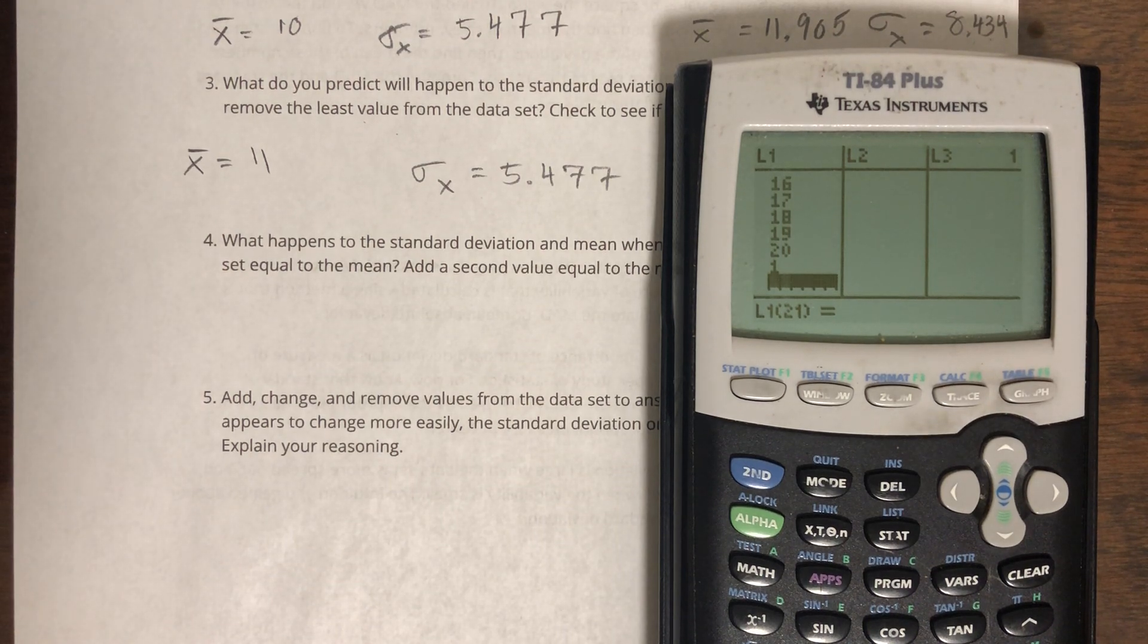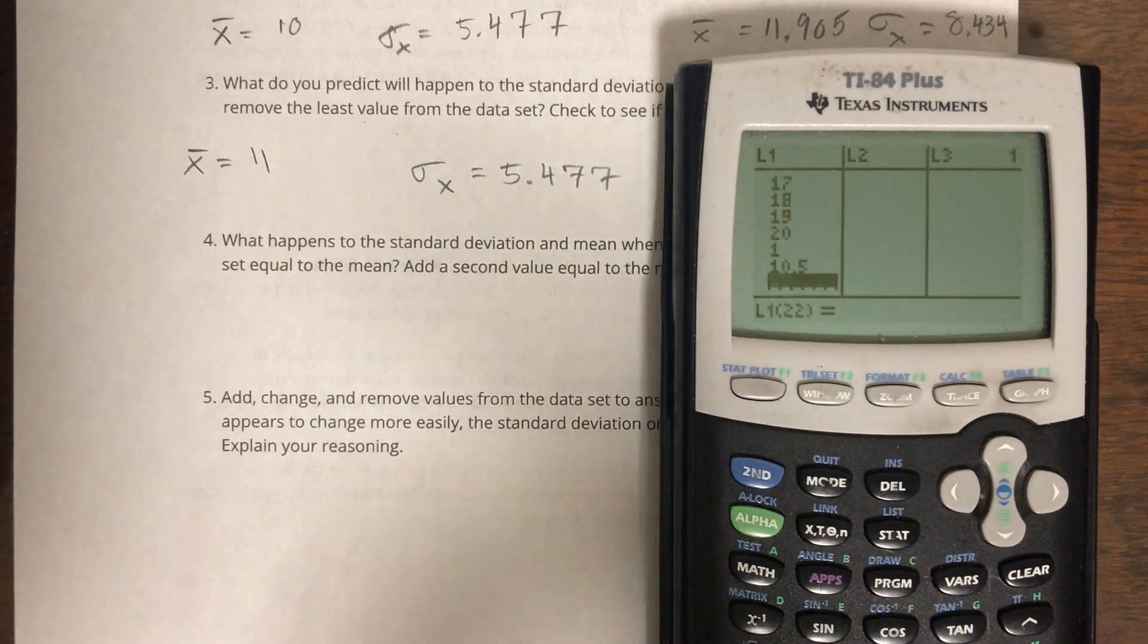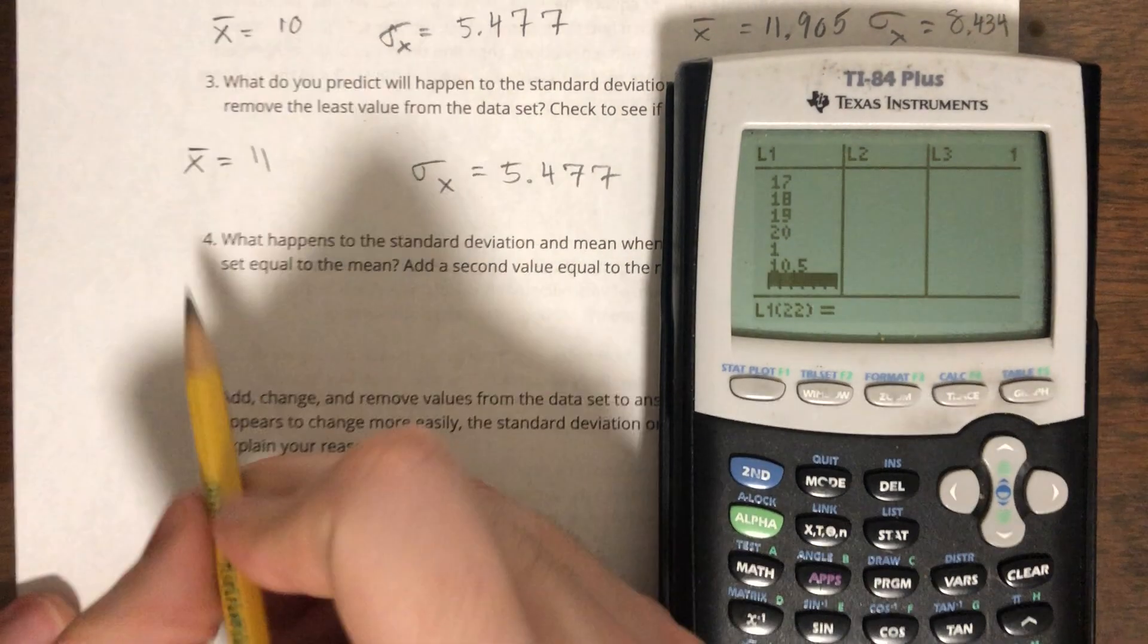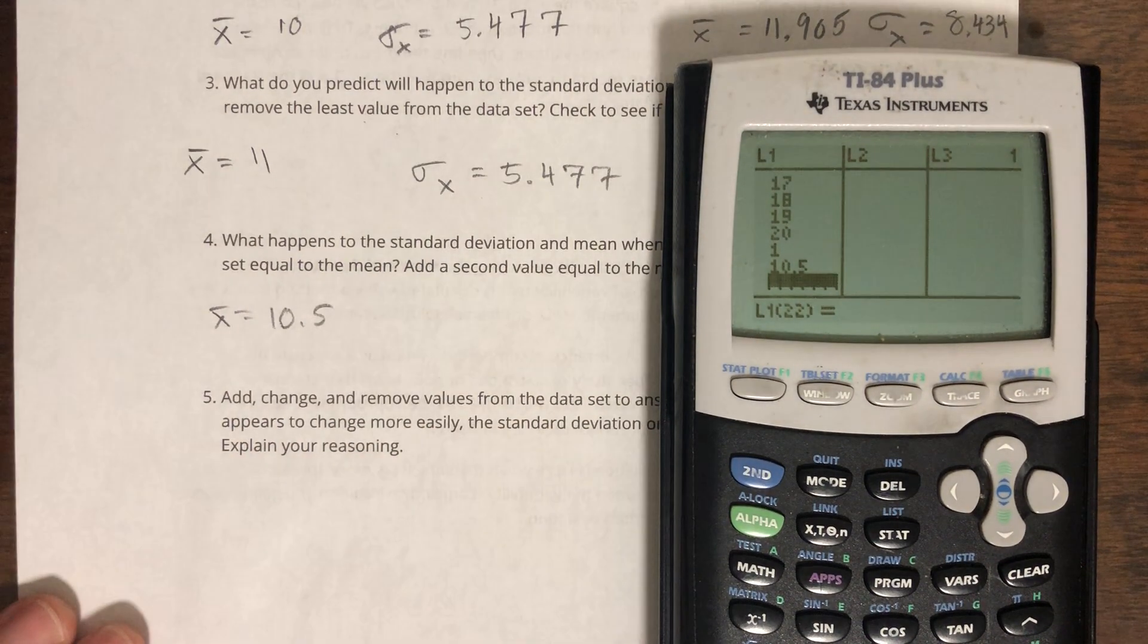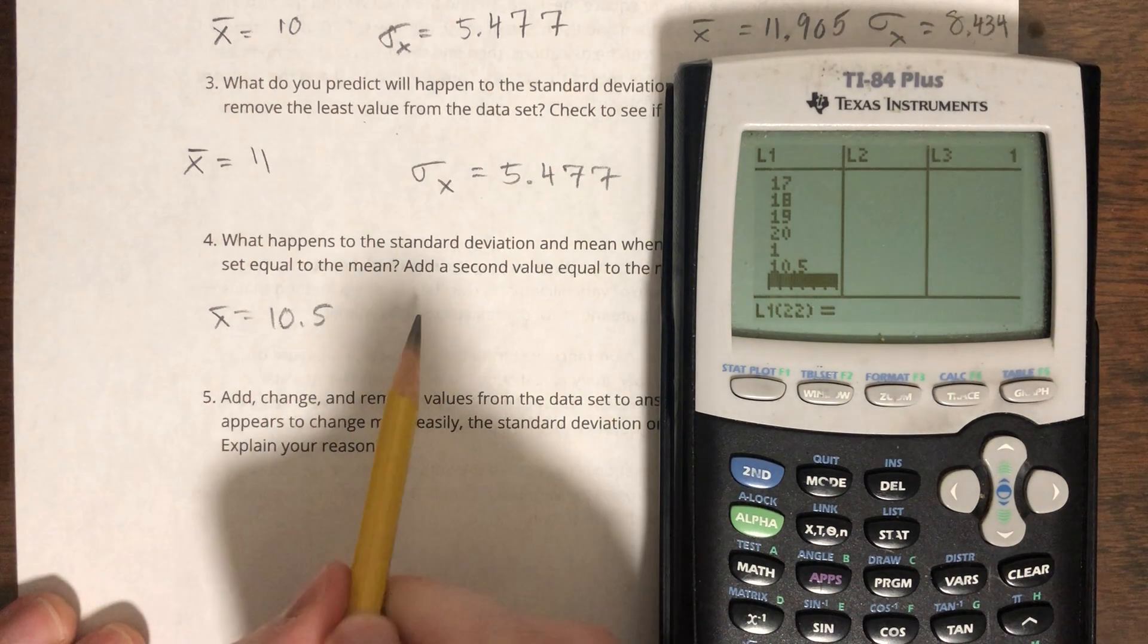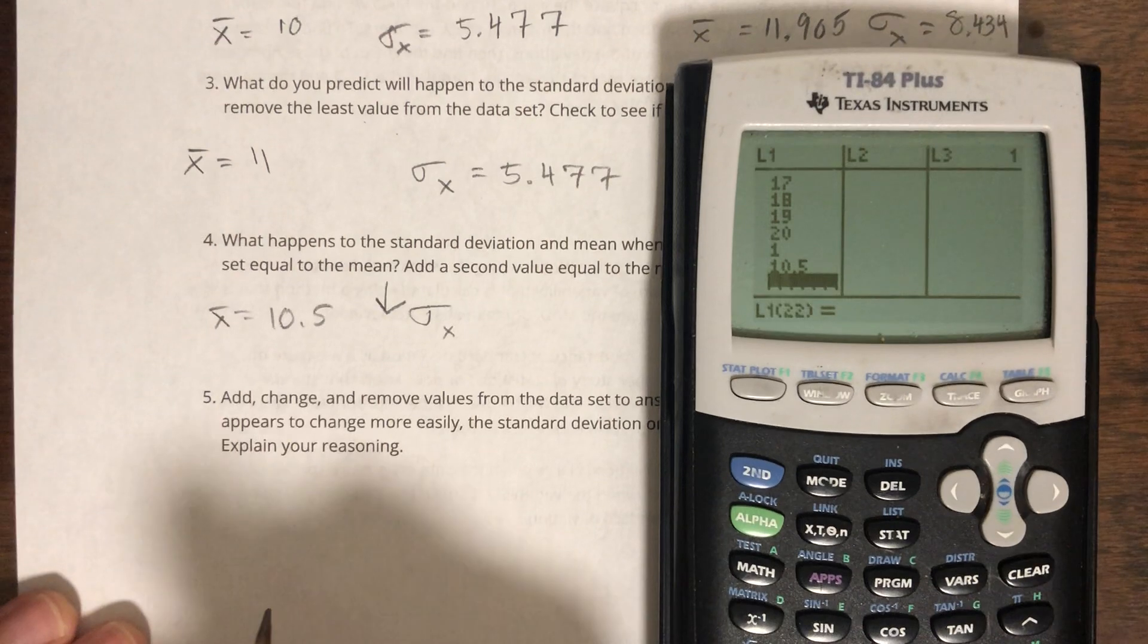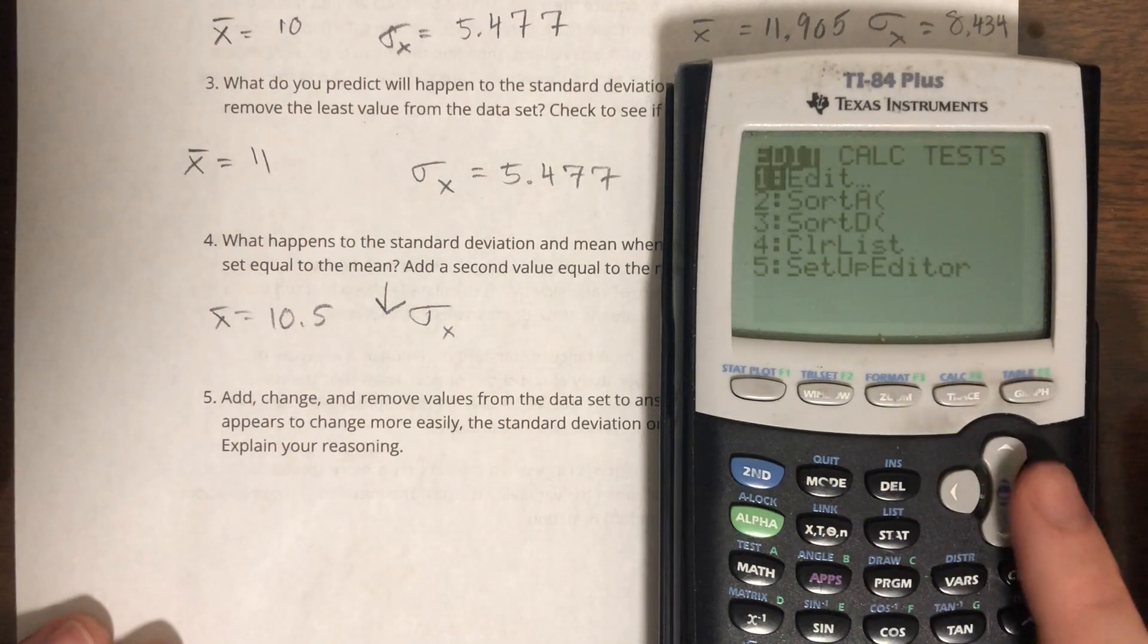So they want me to add another value equal to the mean, so 10.5. So my prediction is if I'm adding a value that's equal to the mean, my mean's just going to stay the same. It's going to stay the same as 10.5. What I think will change is my standard deviation is going to go down because I have another value that's very close to the middle. That makes standard deviation low. So let's see if that works out.